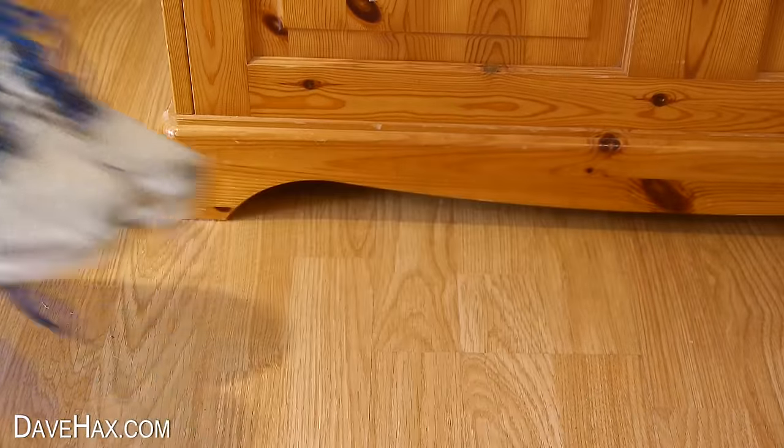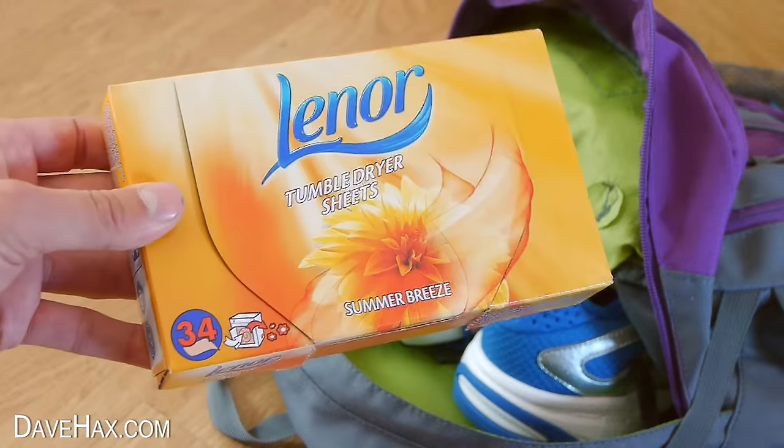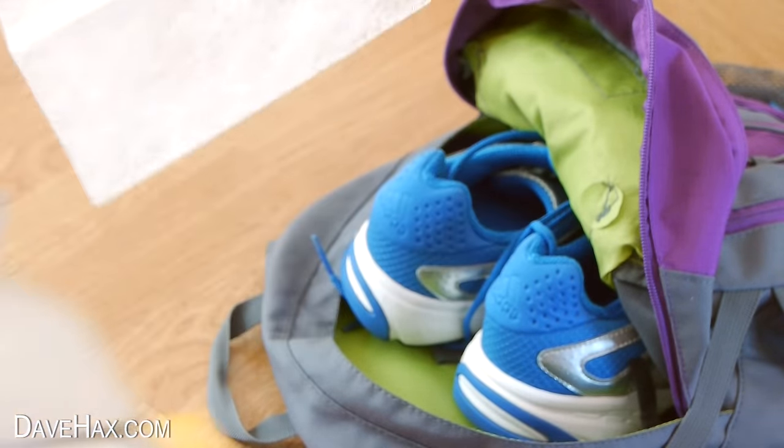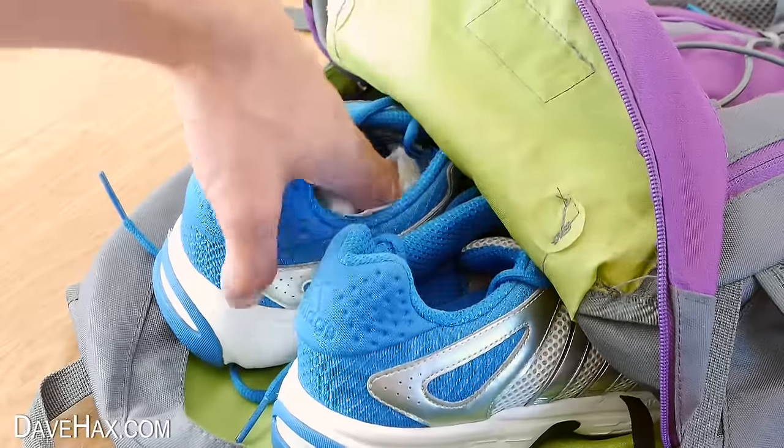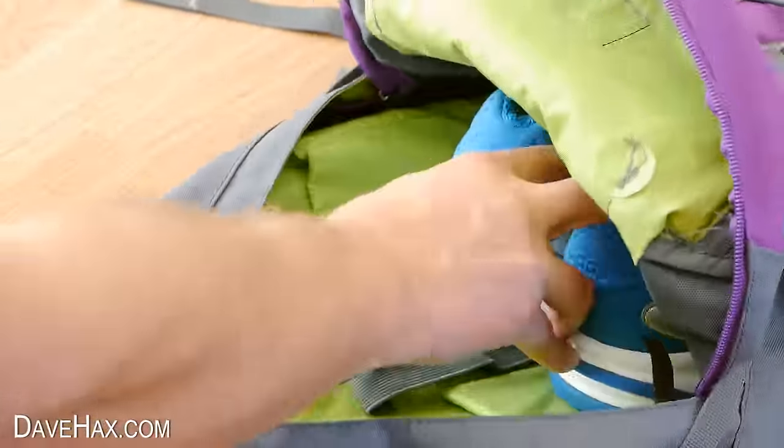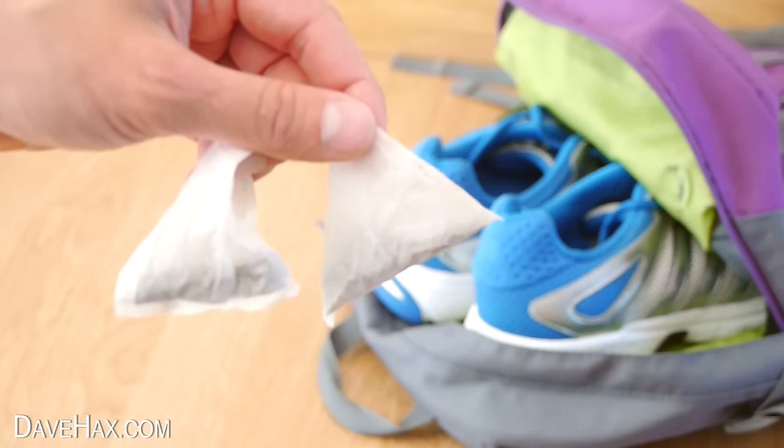If you're packing gym shoes in your bag for sports lessons, you can use tumble dryer laundry sheets to keep them smelling fresh. Just tuck one in each shoe to help fight those nasty odours. If you haven't got dryer sheets you can try using a couple of tea bags instead.